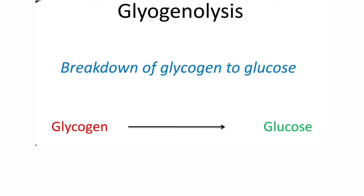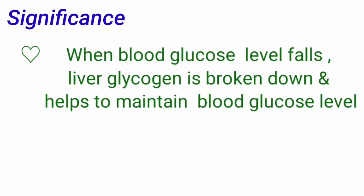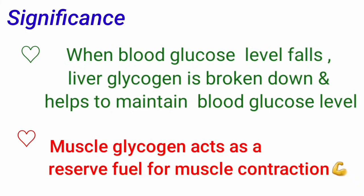It can be defined as breakdown of glycogen to glucose. Coming to significance, after 4 to 5 hours of last meal, blood glucose level decreases. In such conditions, liver will sense the glucose concentration in the blood and it will release glucose into the circulation by glycogenolysis. The glycogen stored in the liver is used to maintain the blood glucose level.